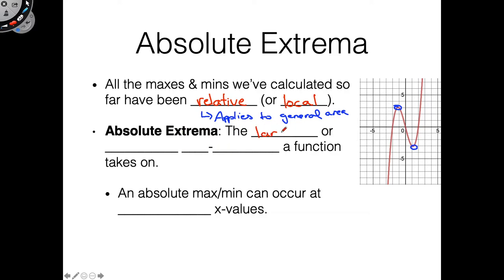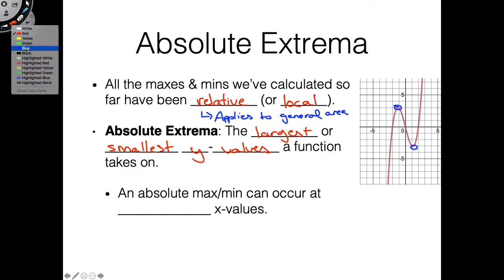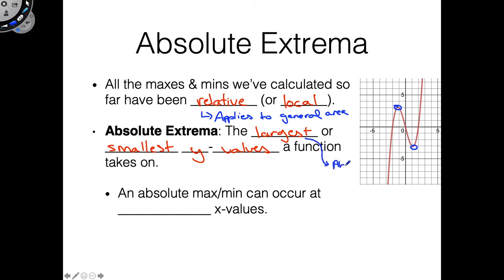Now let's talk about what absolute extrema are. Absolute extreme values are going to be the largest or smallest y-values that a function takes on. So as opposed to my relative maximum, my absolute maximum will be the largest point anywhere on this graph — no questions asked. Same thing goes for my absolute minimum: unlike my relative minimum, it's going to be the smallest point anywhere on this graph. That's the idea of an absolute extreme value — it's the biggest or the smallest.